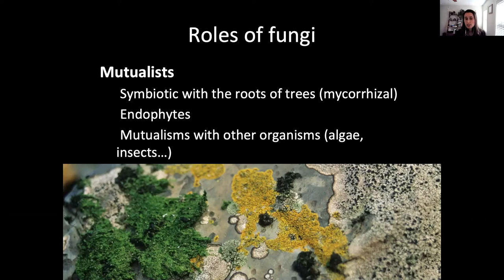Mycorrhizal relationships are really key, but fungi also have many other mutualistic relationships. They can be endophytes living inside plants. Lichens are a mutualistic relationship between an algae and a fungus. There are also mutualisms between fungi and insects — some insects are the original farmers, with ants, termites, and ambrosia beetles bringing fungi with them and maintaining these close relationships.